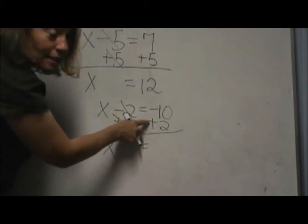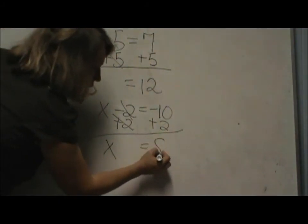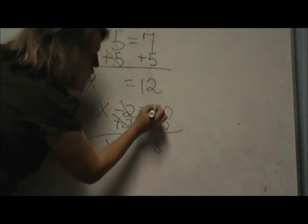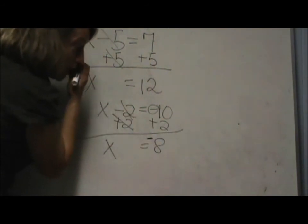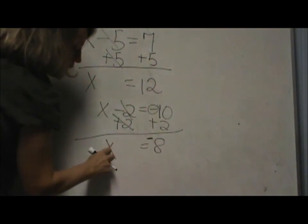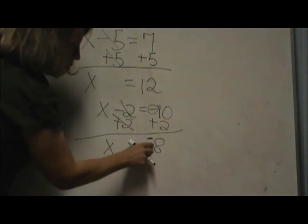When you have different signs subtract which is 8 and take the sign of the larger number which is negative 10 or negative. Therefore the answer is negative 8. So x is equal to negative 8.